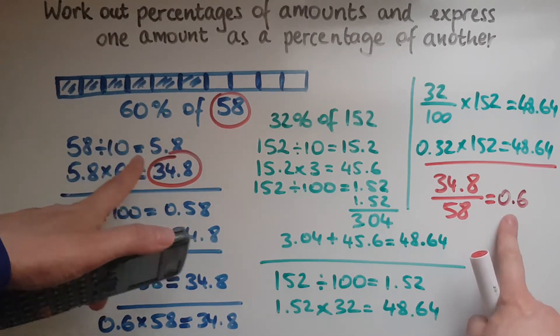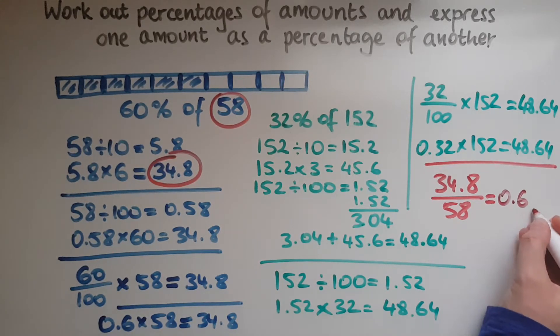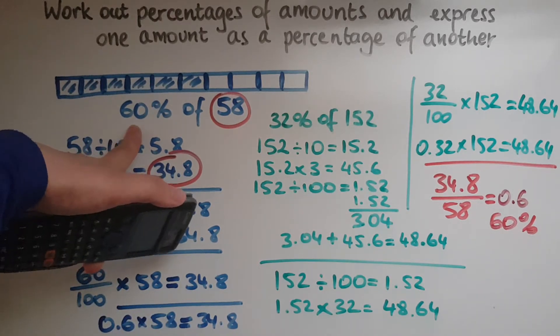And to turn it into a percentage, we look at the two digits after the decimal point. So this is 60% and it matches exactly what we had to begin with.